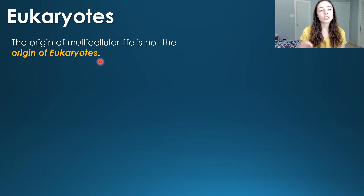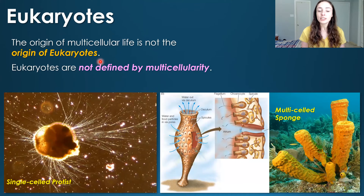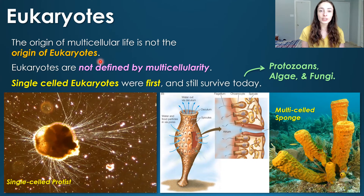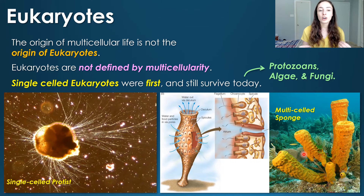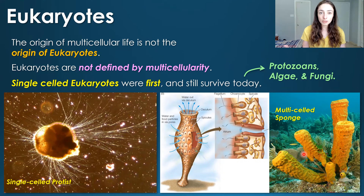It's important to remember that the origin of multicellular life is not the same as the origin of eukaryotes, because eukaryotes are not defined by multicellularity. Single-celled eukaryotes were first to evolve and still survive today — things like protozoans, algae, and fungi. Multicellular life did come about later on, but today we'll be talking about the evolution of eukaryotic cells — the single-celled eukaryotes that came before the multicellularity thing.